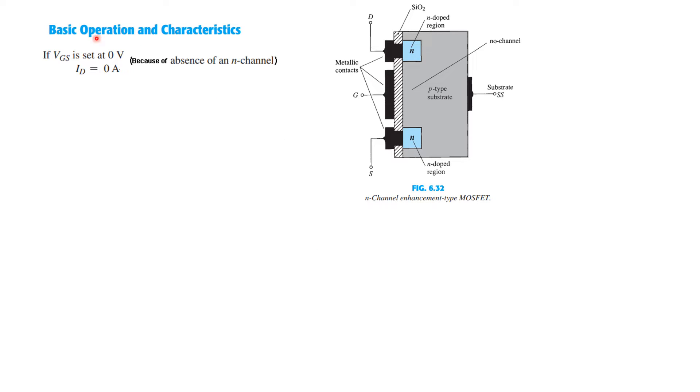Now the basic operation and characteristics: if the gate voltage is set to zero, then the current through this will be obviously zero. But if VGS is positive, apply a positive voltage here, then what will happen? The holes near SiO2 layer will move deeper. So this is the SiO2 layer or silicon dioxide layer which is acting as an insulator.